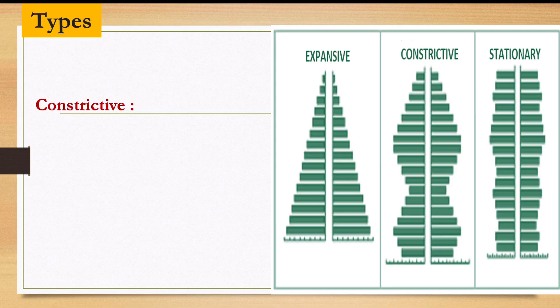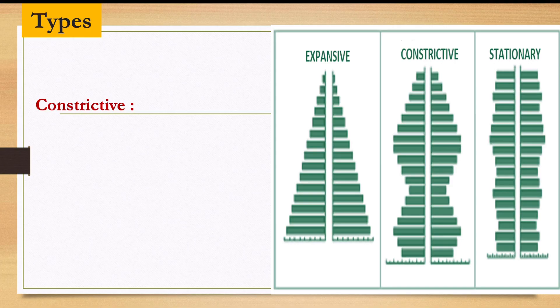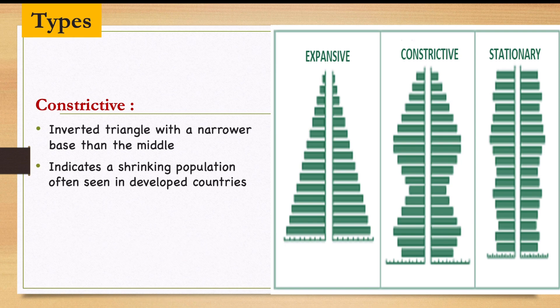The constrictive pyramid takes an inverted triangle form with a narrower base than the middle. As it gets toward the middle it begins to shrink, then broadens a bit, then gets narrow toward the top. This indicates a shrinking population and is often seen in developed countries.